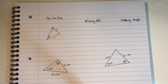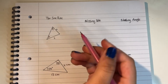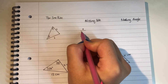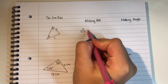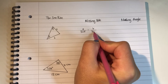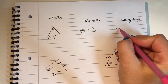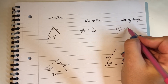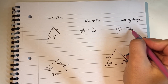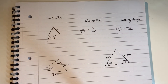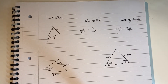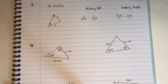The formula for a missing side is A divided by sine A equals B divided by sine B. The formula for a missing angle is sine A over A equals sine B over B. These are the only formulas you need to know. When finding a missing side, the lowercase letter is on top; when finding a missing angle, sine A and sine B are on top.